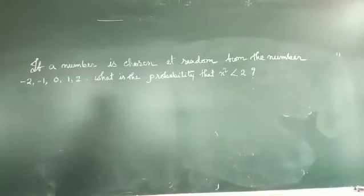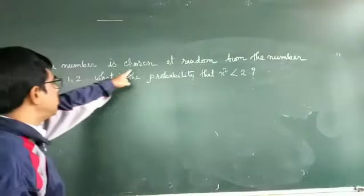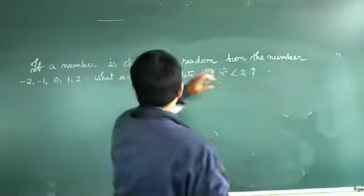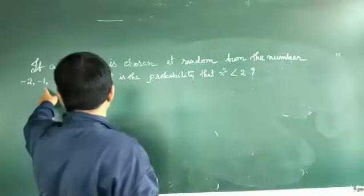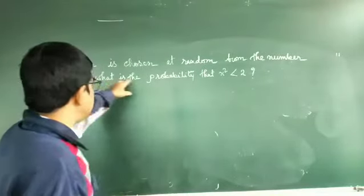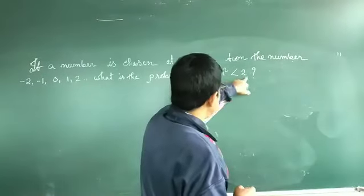Okay, the next number. If a number is chosen at random from the numbers -2, -1, 0, 1, 2, what is the probability that x squared is less than 2?